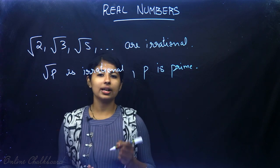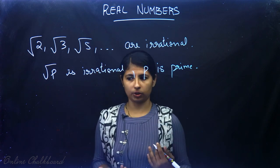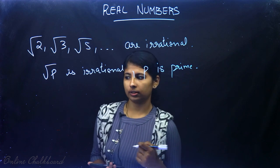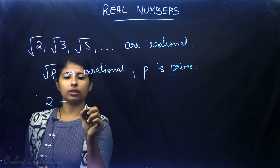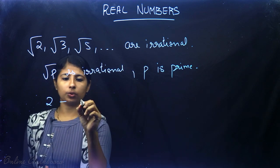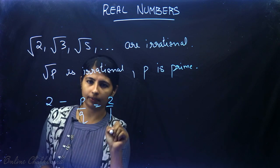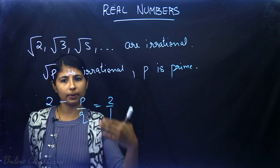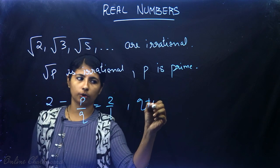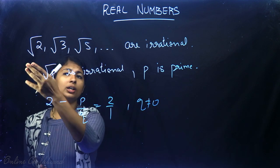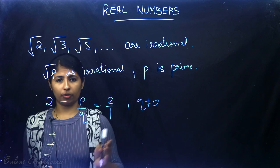We know a number is irrational if it cannot be written in the form p/q. For example, 2 is a rational number — it can be written as 2/1, which is in the form p/q where q is not equal to 0. So when a number is irrational, it cannot be written in the form p/q.